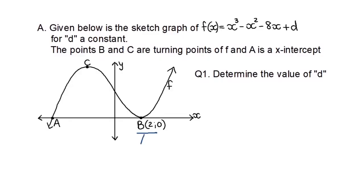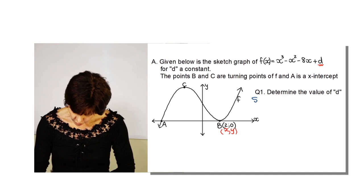To find D, I know that a point lying on the graph will satisfy the equation. If I substitute the x and y values of that point into the equation, I can solve for the only unknown, which is D.